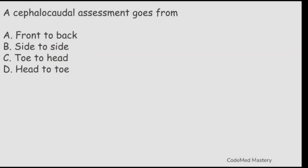Next question: a cephalocaudal assessment goes from? Option A: front to back. Option B: side to side. Option C: toe to head. Option D: head to toe. The right answer is option D, head to toe. Cephalo means relating to the head and caudal means away from the head, so a cephalocaudal assessment goes from head to toe.